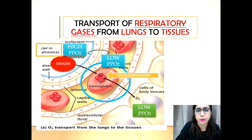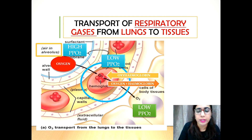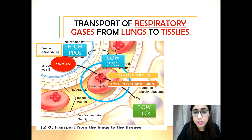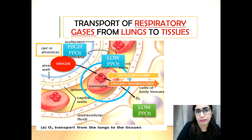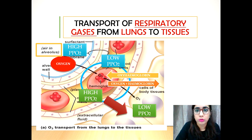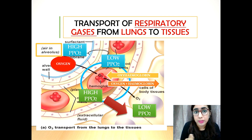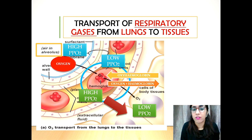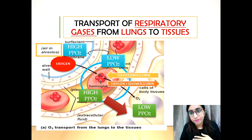The cell bodies have a low partial pressure of oxygen because oxygen is used up during metabolism. When the oxygen reaches the cell body or tissue, oxyhemoglobin breaks down into hemoglobin and oxygen so the oxygen can be used by the tissues. This increases the partial pressure of oxygen within the blood capillaries, causing oxygen to diffuse from the blood capillaries into the tissue following the partial pressure gradient.